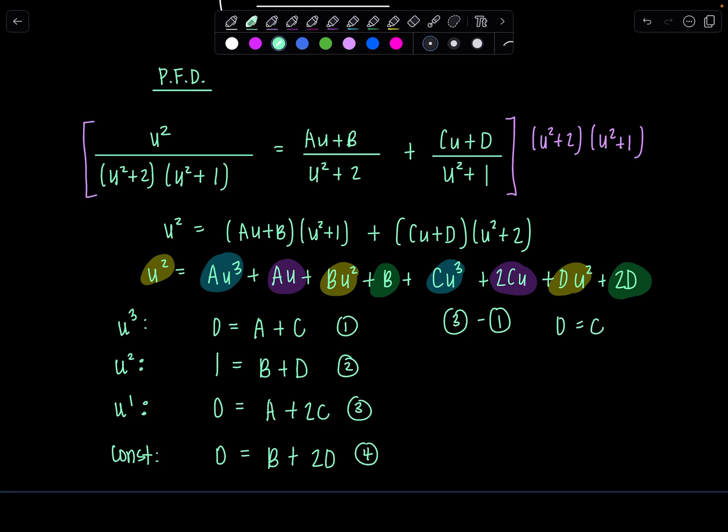And then back into equation one, if c is zero, then a is zero. And for a moment when I did this I got a little nervous, I thought perhaps I've done something wrong, but no, everything's great.